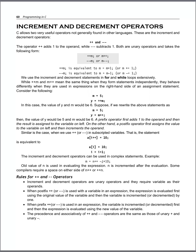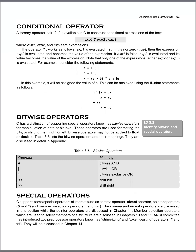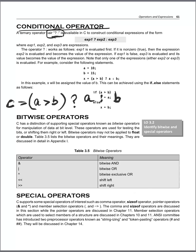Precedence and associativity will be explained later. Next is the conditional operator — another category with just one operator. It is the pair of a question mark and a colon. The way to write it is: suppose c = a > b ? a : b. The question mark operator is the conditional operator.